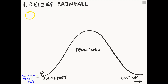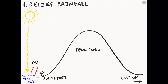The sun sends solar radiation down to ground level and heats the Irish Sea in this example. The water in the Irish Sea will begin to heat up and turn from a liquid into a gas known as water vapour. We call this process evaporation.